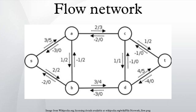Often in operations research, a directed graph is called a network. The vertices are called nodes and the edges are called arcs. A flow must satisfy the restriction that the amount of flow into a node equals the amount of flow out of it, unless it is a source, which has more outgoing flow, or sink, which has more incoming flow.